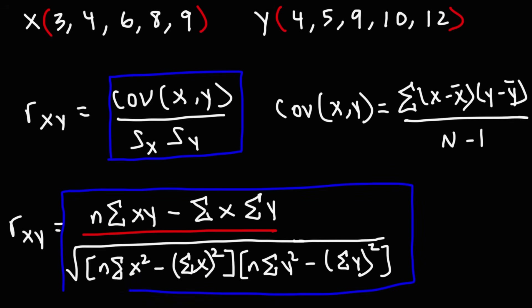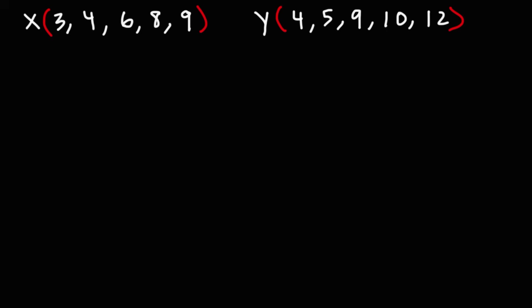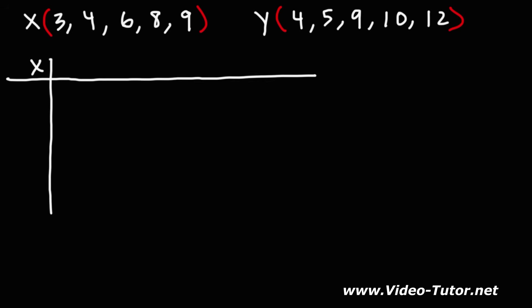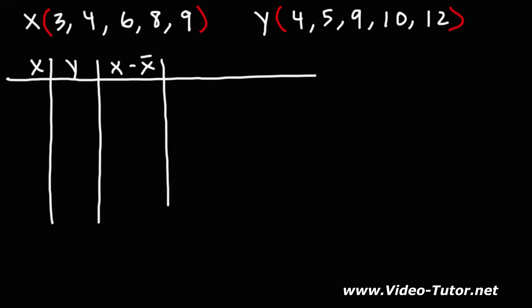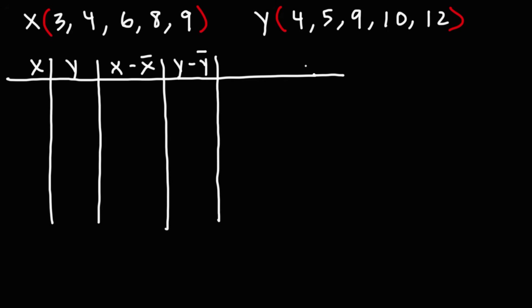We're going to do it both ways, but let's start with the first equation. We'll begin by making a table to calculate the covariance. The table will have columns for x, y, x minus x-bar, y minus y-bar, and the product of x minus x-bar and y minus y-bar.